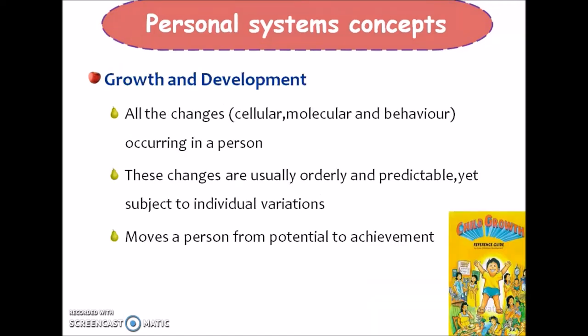Next is growth and development. All the changes — whether cellular, molecular or behavioral — occurring in a person during the life process constitute growth and development. These changes are usually orderly and predictable, though individual variations can occur. Growth and development moves a person from potential to achievement.